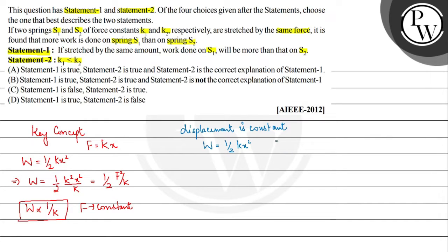Then we have, if we consider first work done, that will be half of K1 times X square, and W2 which we consider, that will be half of K2 X square.